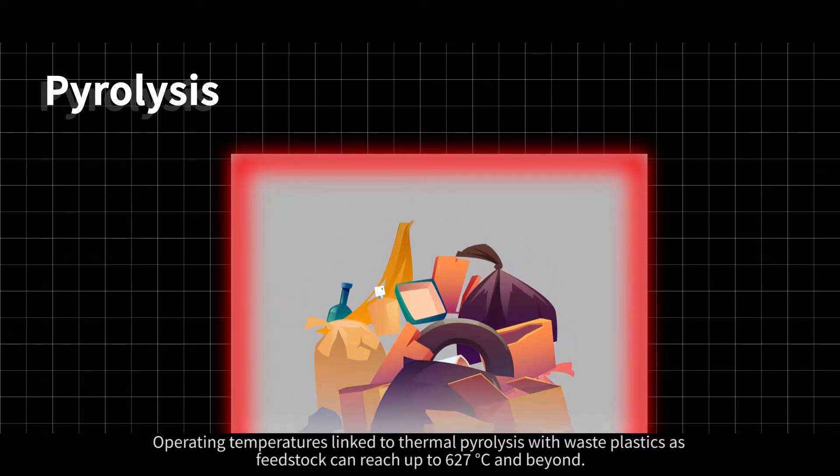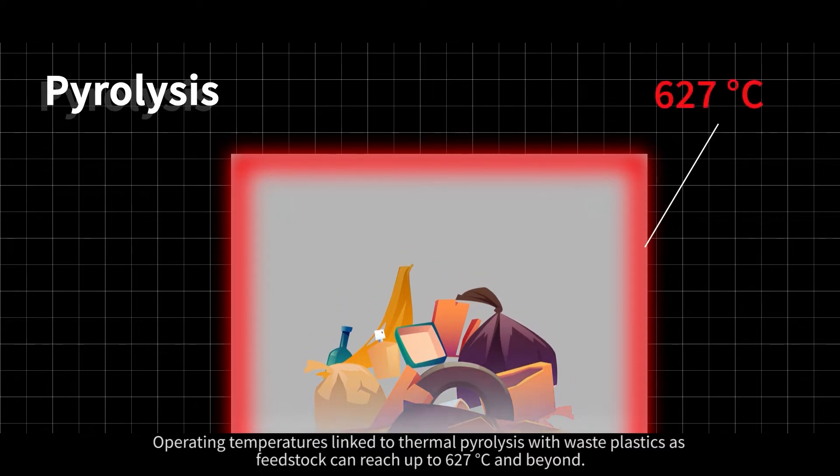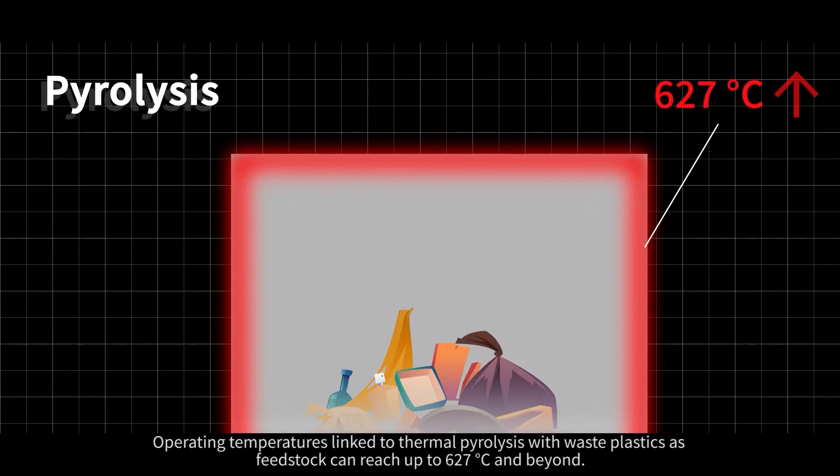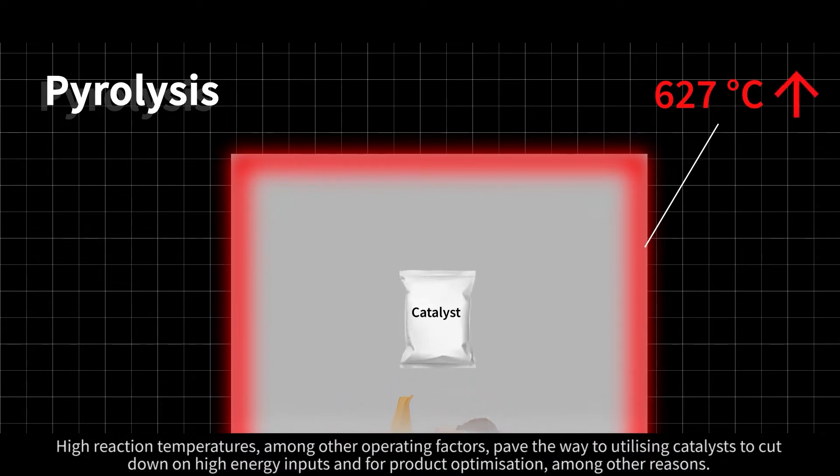Operating temperatures linked to thermal pyrolysis with waste plastics as feedstock can reach up to 627 degrees Celsius and beyond. High reaction temperatures, among other operating factors, pave the way to utilizing catalysts to cut down on high-energy inputs and for product optimization, among other reasons.